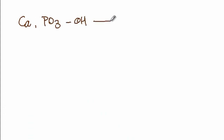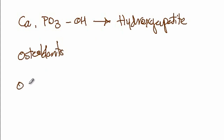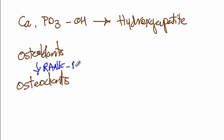The bone is made of a combination of calcium and phosphate combined with hydroxide, forming hydroxyapatite, which is highly resistant to fractures. The cells involved in the formation of bones are osteoblasts, while the cells involved in the destruction of bones are osteoclasts. It is the osteoblasts that will send signals via RANK-L as well as macrophage colony stimulating factor to induce monocytes to be converted into osteoclasts.